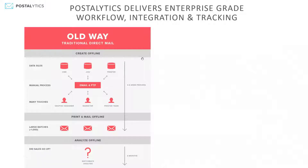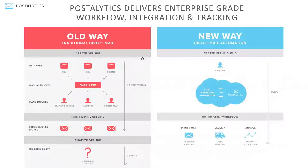Because of that, printers really required you to have very large batches in order to make this worth anybody's while. The whole process would take four to six weeks to get a campaign out, and then there's very little information about what happened once you sent. We've solved that with Postalytics by doing direct mail in the cloud. We've created APIs that allow us to tap into tools like Salesforce and work directly with Postalytics, making direct mail as easy as sending email.